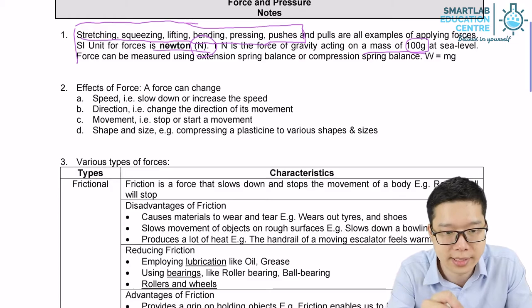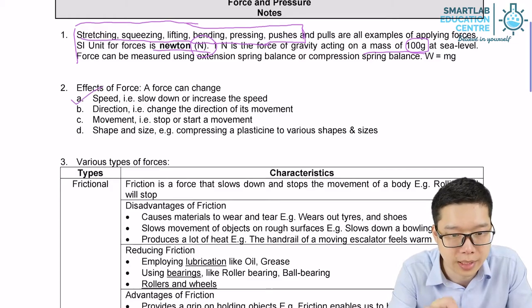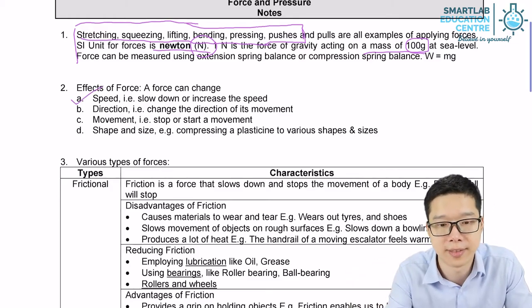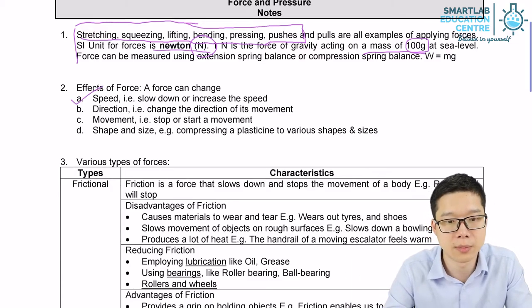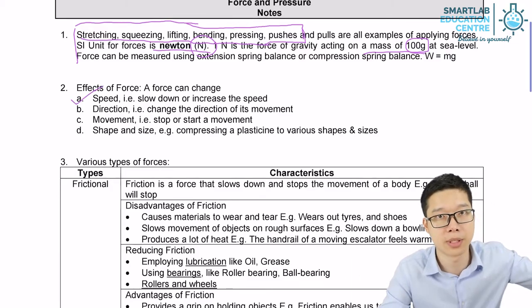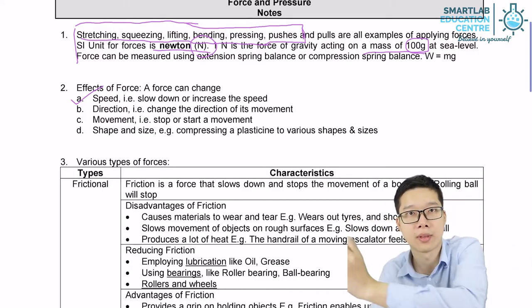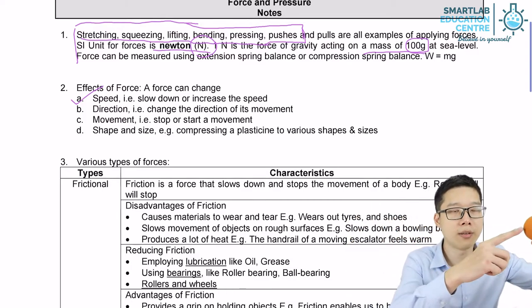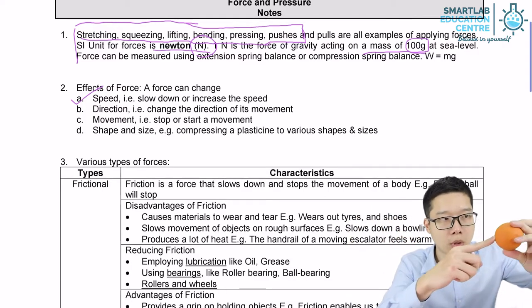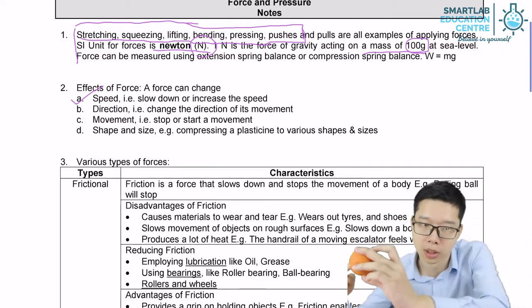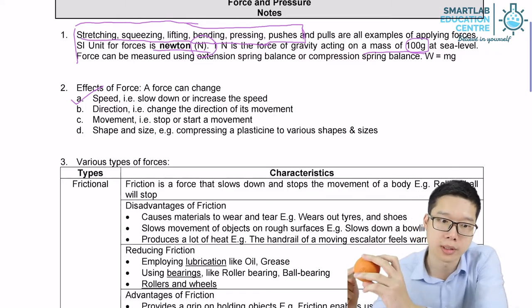The effects of forces can affect an object's speed. For example, if you apply force, the ball can go faster. If you apply force, the ball can go slower as well.